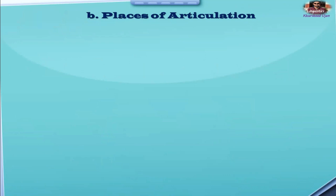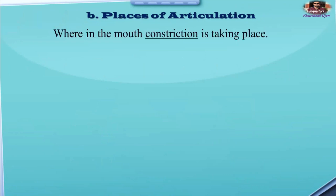What are places of articulation? Places of articulation are where in the mouth construction is taking place — meaning the process of compression. Where you feel that process in the mouth, this is called articulation, or places of articulation.